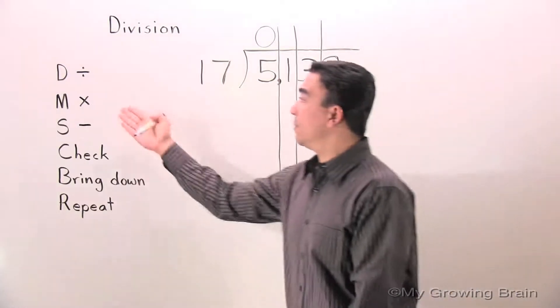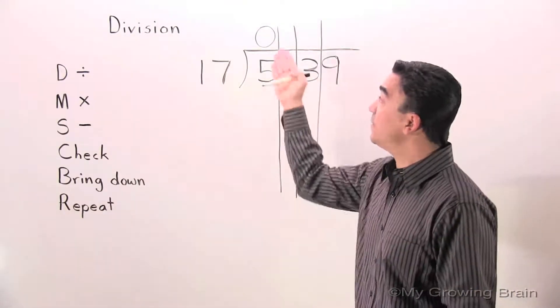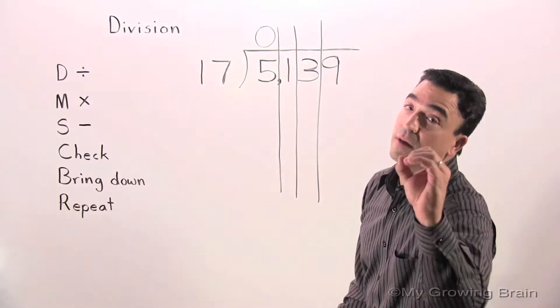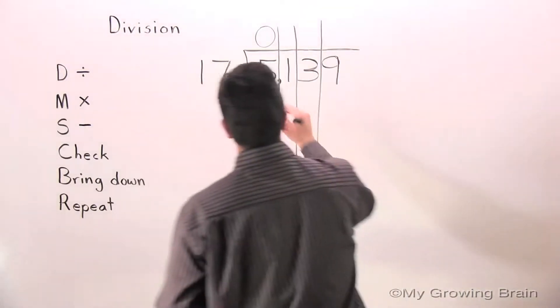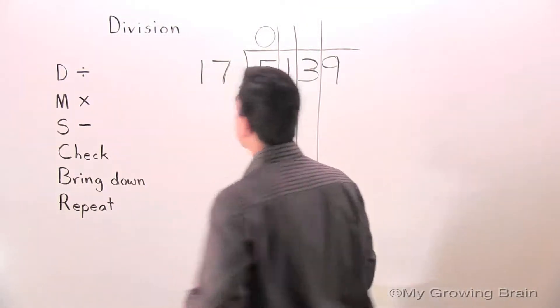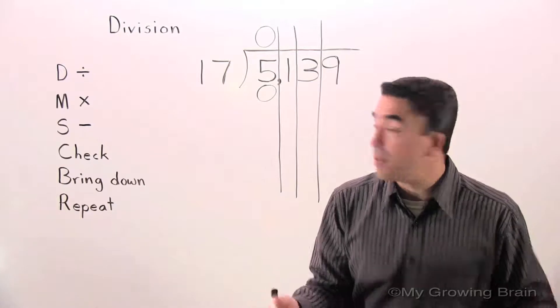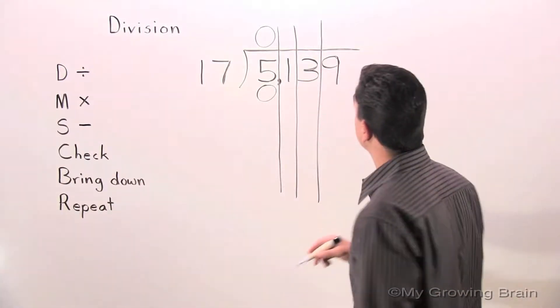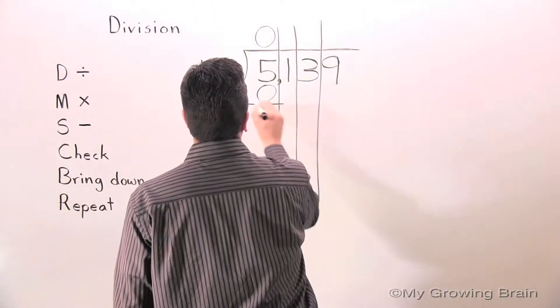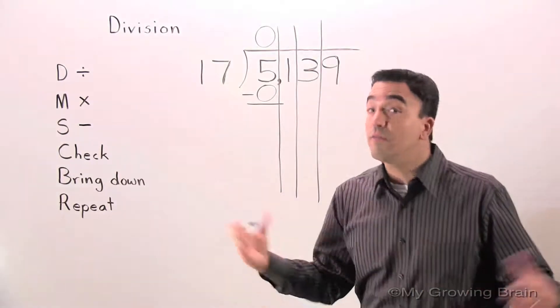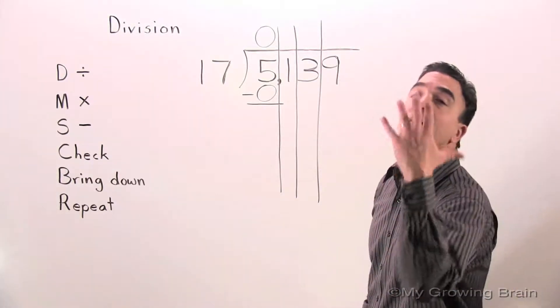Next step, multiply. 17 times zero is zero. Next step, subtract. 5 minus zero, 5.